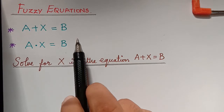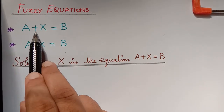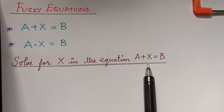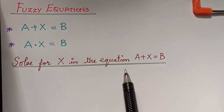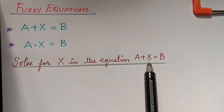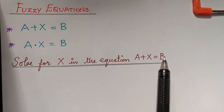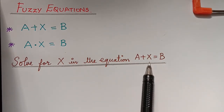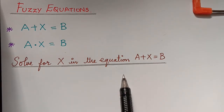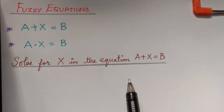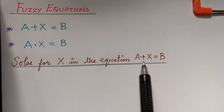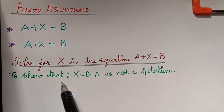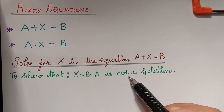In this video, we will be solving the equation a + x = b, where a and b are fuzzy numbers and x is the unknown fuzzy number. As the first step, we have to show that x = b - a is not a solution of this equation. Before finding the actual solution, we must first demonstrate this.